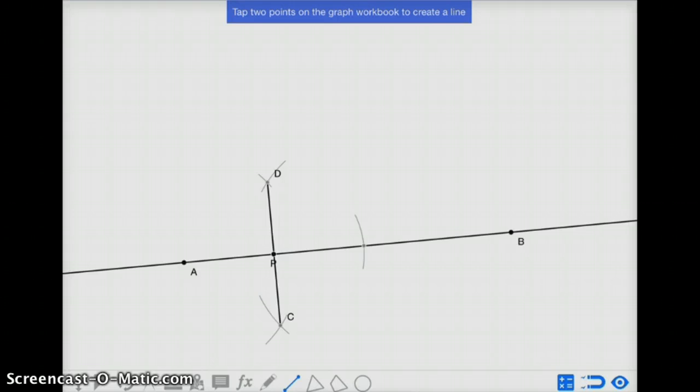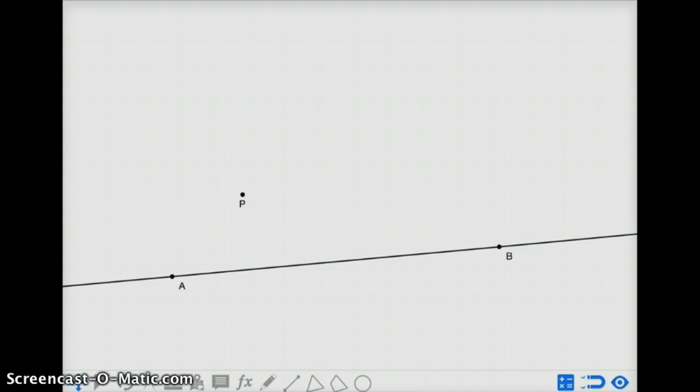What happens, however, if P is not on the line that we're trying to create, for instance, if P is raised up to this location, how can I create that perpendicular line?